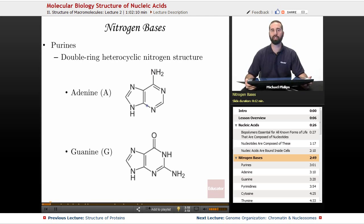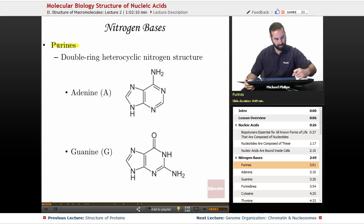Now the nitrogenous bases that we talked about, remember I said A, G, T, and C. Well, those can be split into two different categories. We have our purines. Purines, those are our double ring heterocyclic nitrogen structures.